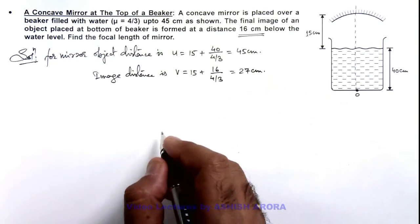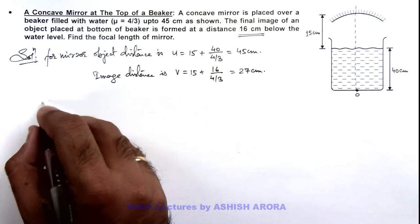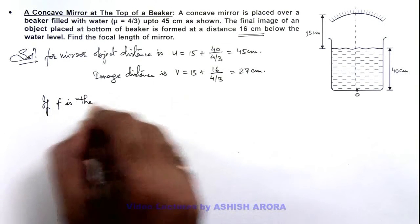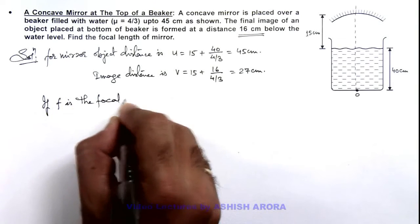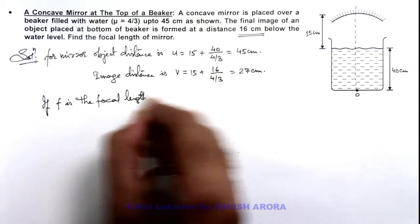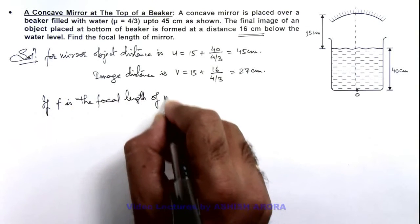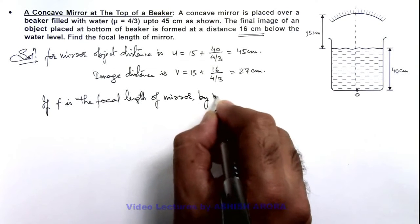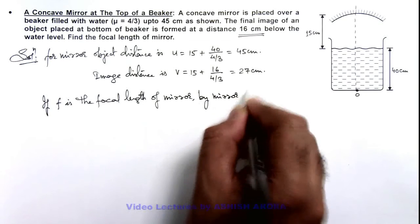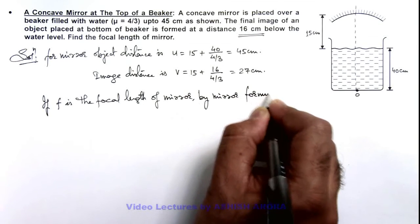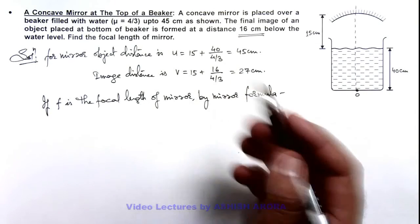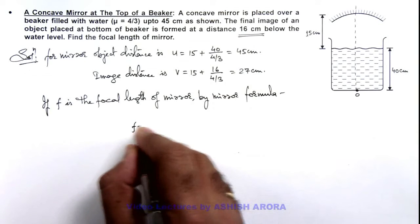If we use f as focal length of the mirror, if f is the focal length of mirror, here by mirror formula we can write, as object and image both are located on the same side of mirror we can take u and v as positive, so f is equal to u v by u plus v.